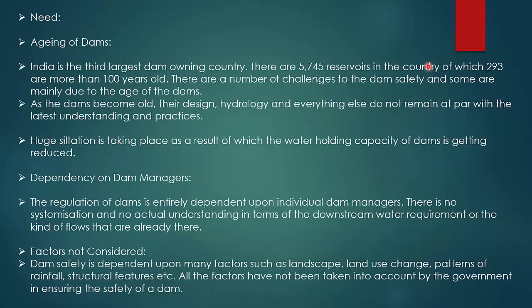293 dams in the country have crossed 100 years old. You can imagine the science and technology available 100 years ago was very limited. Huge siltation is taking place, as a result of which the water-holding capacity of dams is getting reduced.